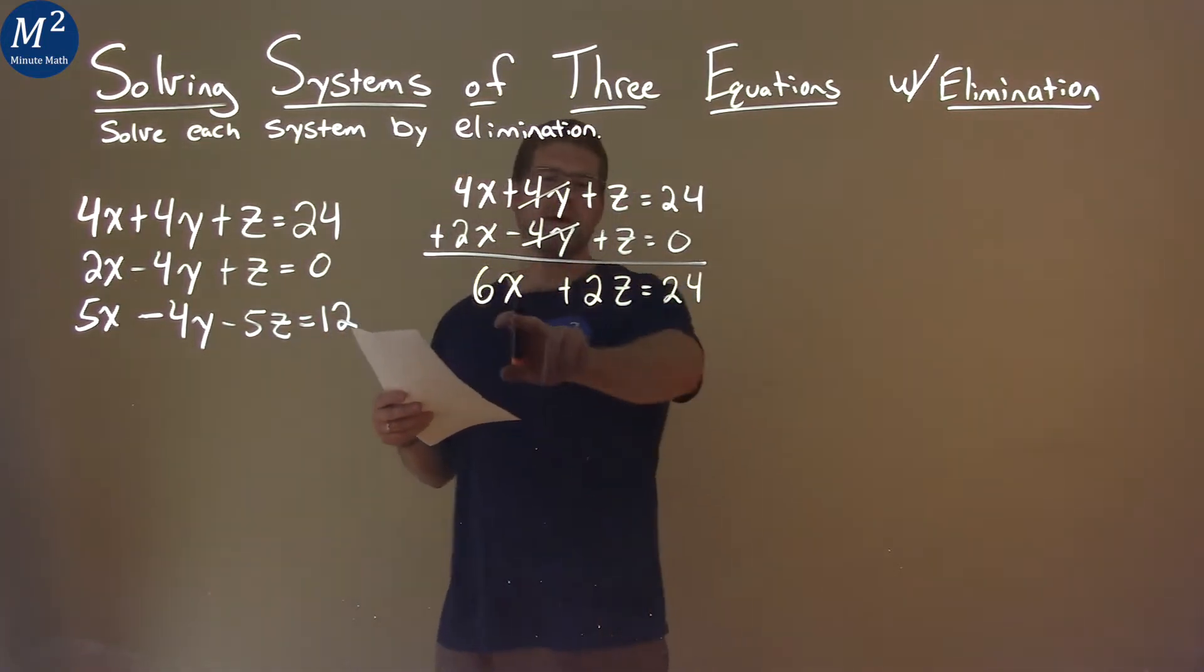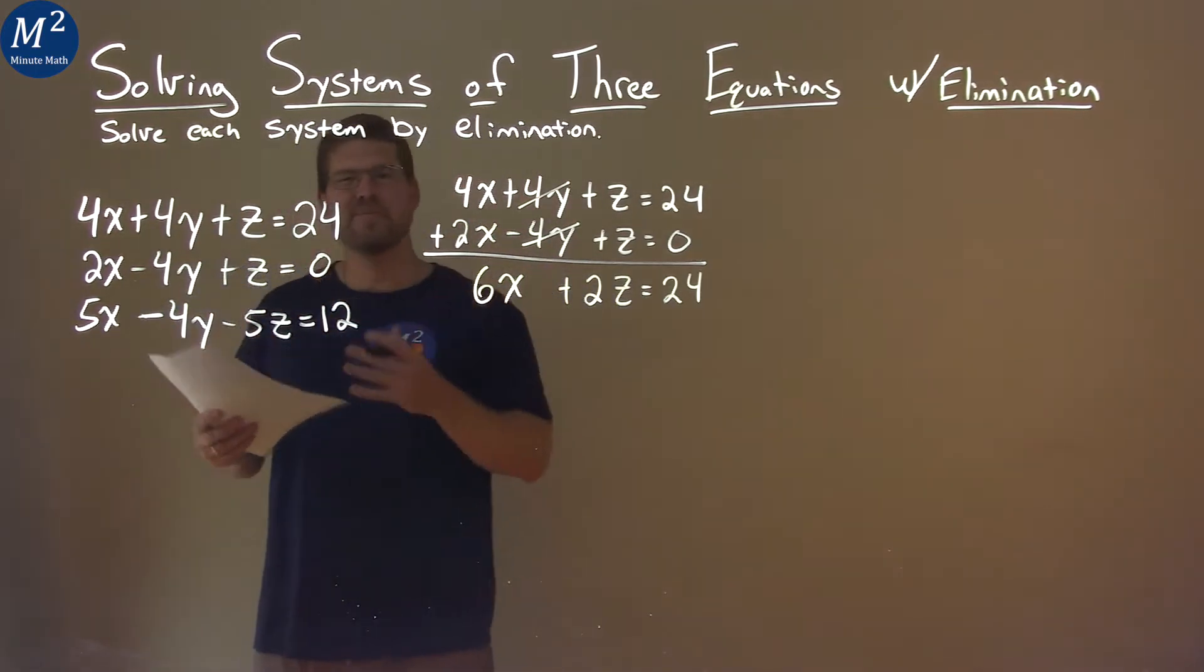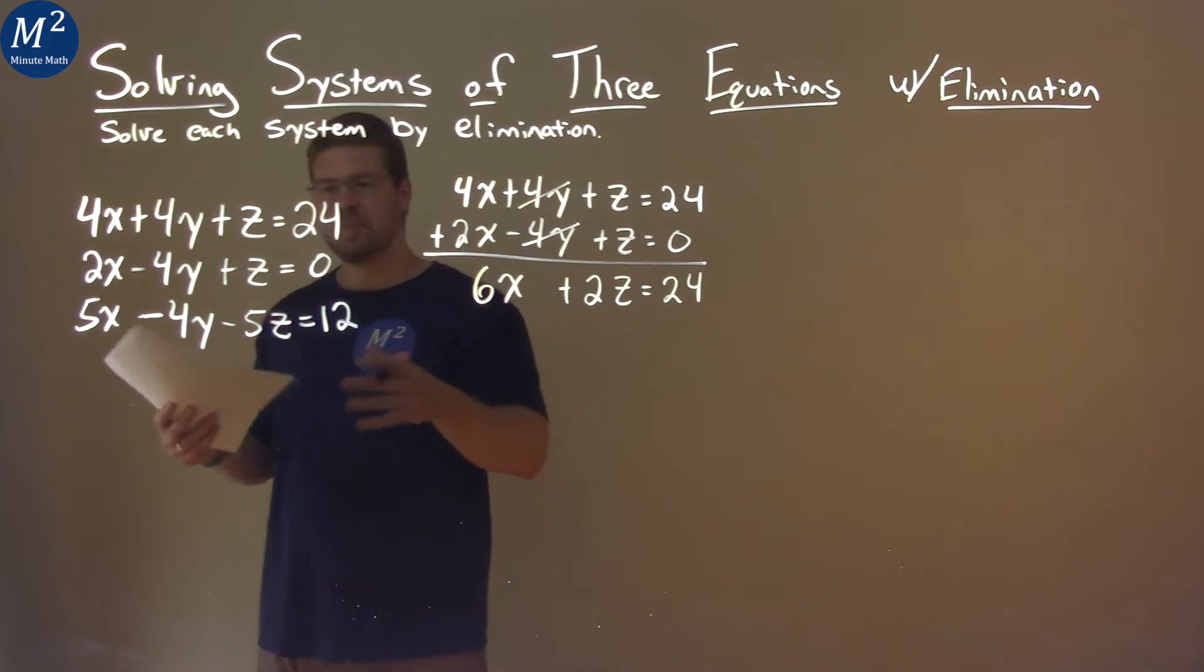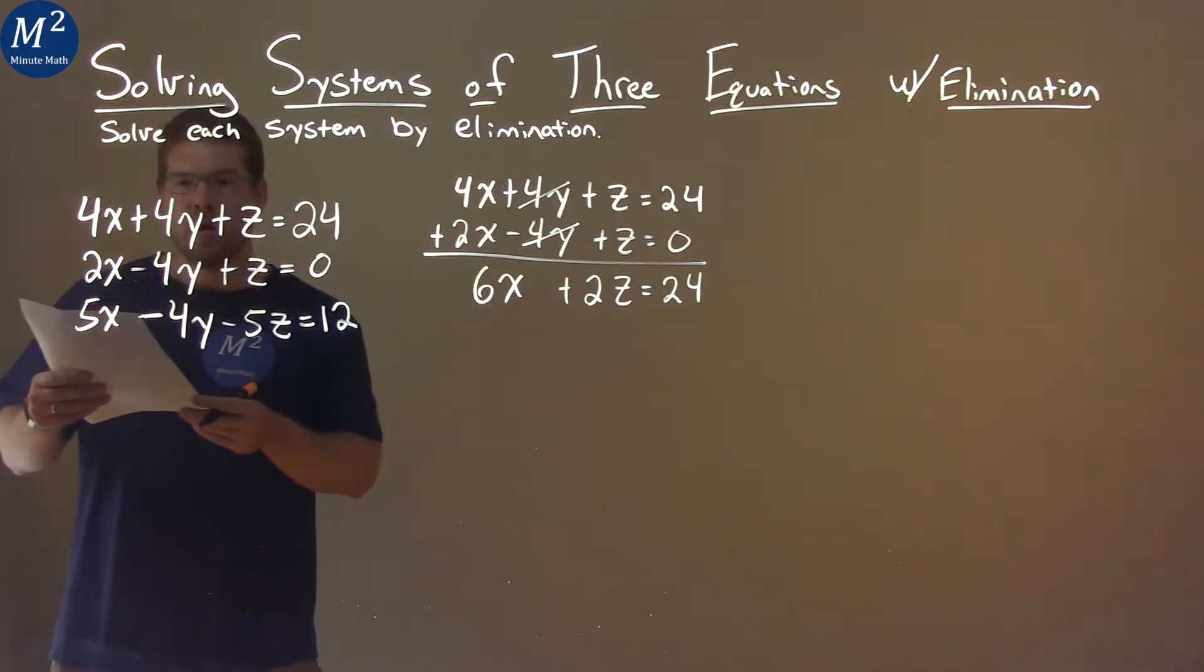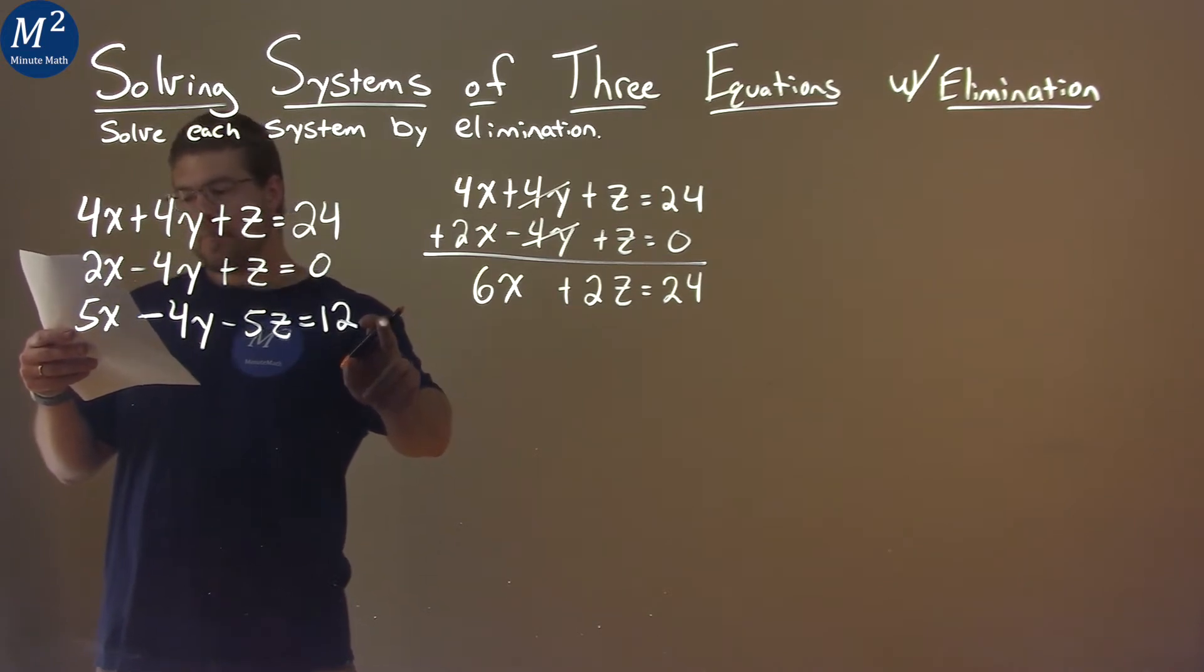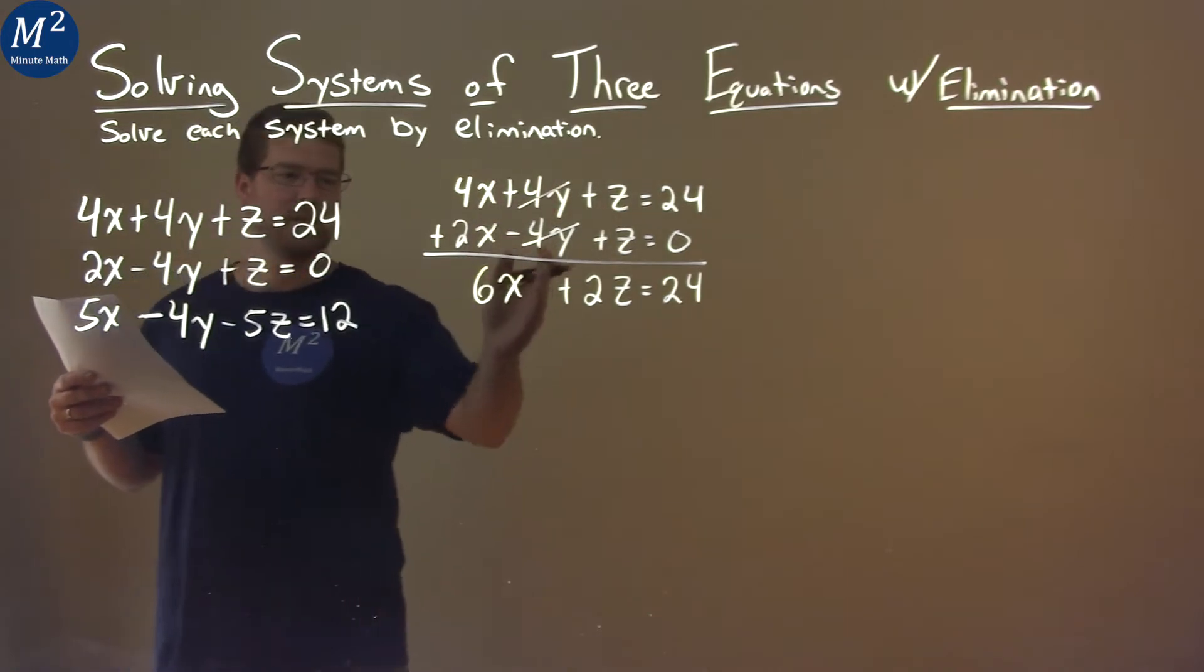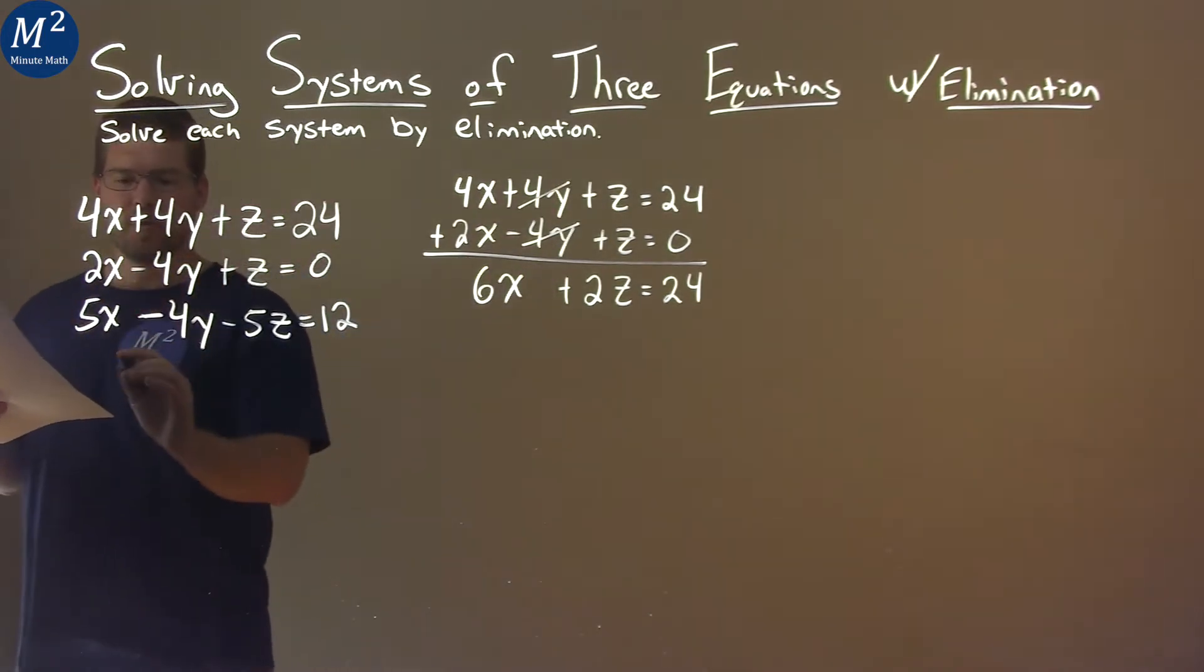All right. We have two variables here. So we'll see if we can take two other equations and eliminate them to get another variable gone. Well, if I look at the first equation and the last equation, we can eliminate a variable, the y's. And that's cool. You want the same variable to be eliminated as well. So let's rewrite that here.